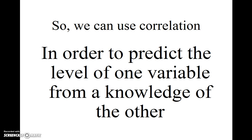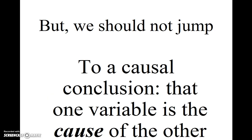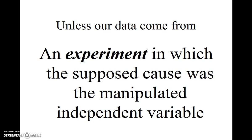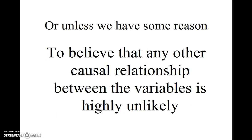We can use correlation in order to predict the level of one variable from a knowledge of the other. But we should not jump to a causal conclusion that one variable is the cause of the other, unless our data come from a formal experiment in which the supposed cause was the manipulated independent variable of that experiment, or unless we have some other reason to believe that any other possible causal relationship between the variables is highly unlikely.